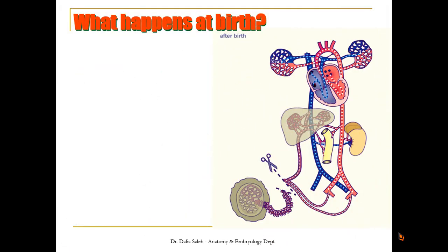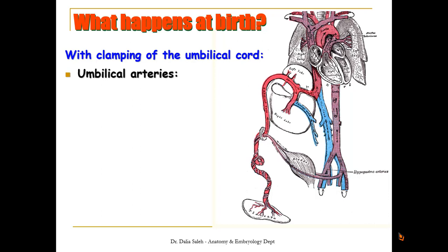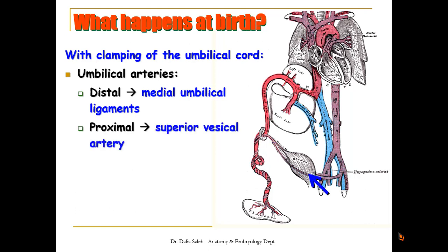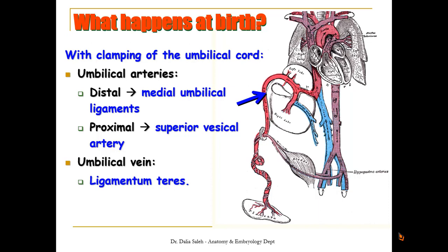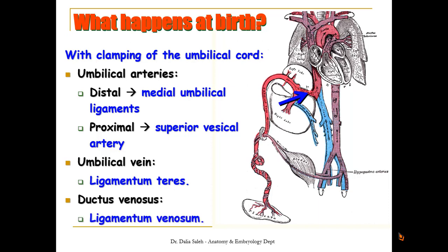The fossa ovalis is visible on the right side of the interatrial septum, with a border called the limbus of fossa ovalis. The second postnatal change is cutting or clamping of the umbilical cord. The umbilical arteries are no longer needed; their distal parts obliterate and transform into the medial umbilical ligament, while their proximal portions persist and give rise to the superior vesical artery supplying the urinary bladder. The umbilical vein becomes fibrosed and transforms into the ligamentum teres, and the ductus venosus closes and transforms into the ligamentum venosum.